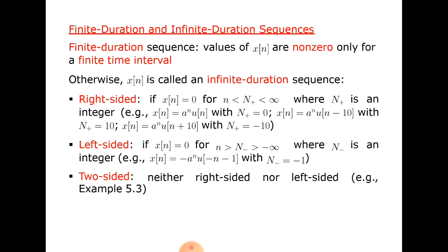Examples of right-side sequences: x(n) equals a^n times u(n) with n-plus equal to 0; x(n) equals a^n times (u(n) minus u(n-10)) with n-plus equal to 10; and x(n) equals a^n times u(n+10) with n-plus equal to minus 10.